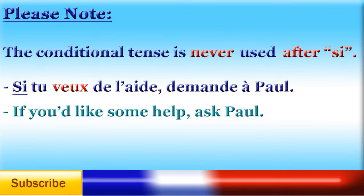The way to work out which tense to use after 'si' is to work out another way of saying what you want in English without saying 'would.' For example, we could say 'if you want some help, ask Paul' instead of 'if you'd like some help, ask Paul.' 'Want' is in the present tense and doesn't change the meaning. So the present tense is what we use in this instance, because we can't use the conditional after 'si.'